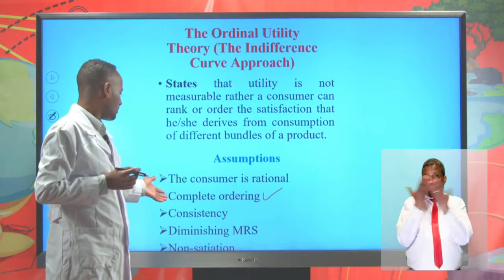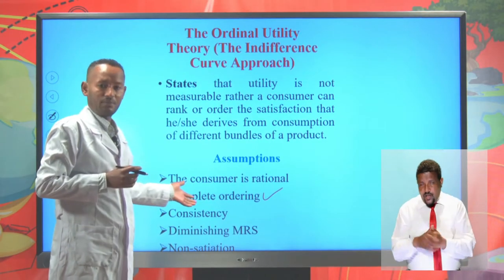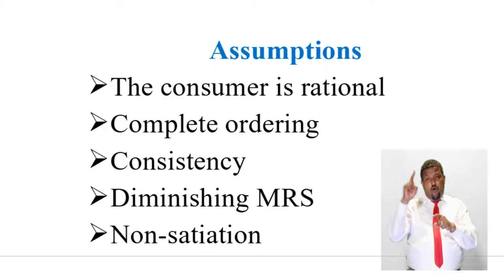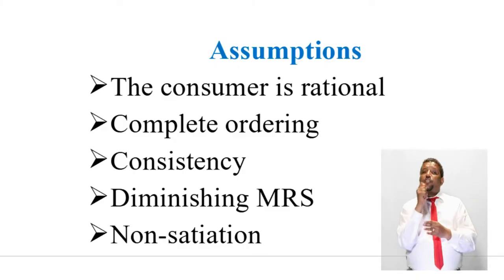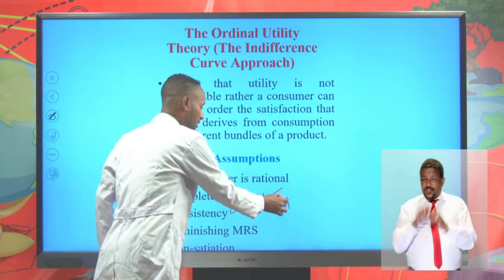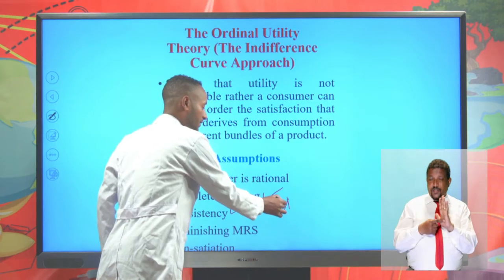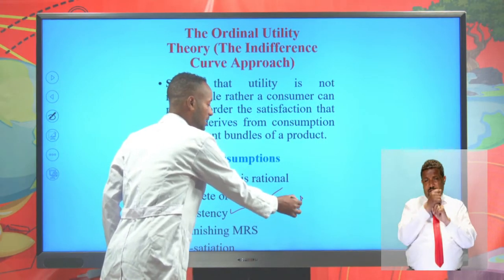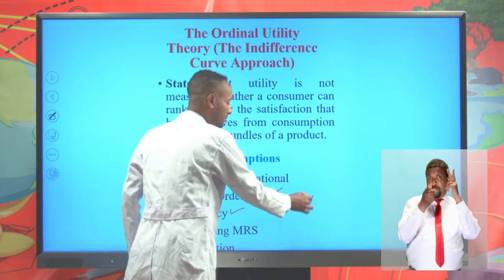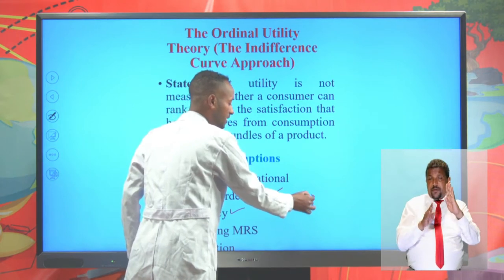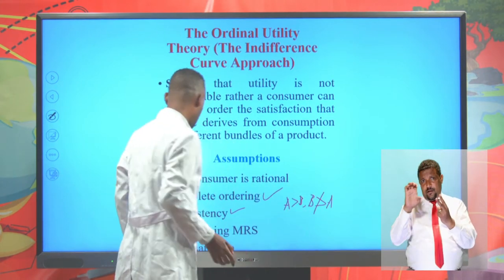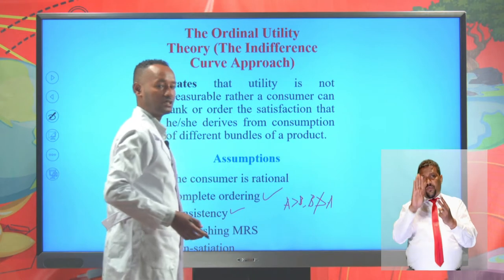Another assumption or precondition that must be fulfilled for the ordinal utility theory is consistency. That means if a consumer prefers bundle A over bundle B, then at the same time, he must not prefer bundle B over bundle A.